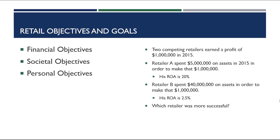Another category of objectives that most retail entrepreneurs have are personal objectives, which are geared towards the individual who is opening the store. Especially small independent retailers will have personal objectives — the self-gratification, the status, and the respect that comes from opening and running a business. A personal objective might be to retire by age 50, to have a business you can hand down to your children, or to open an outdoor equipment store because you love hiking and camping, which helps fulfill your personal need of being close to that environment.